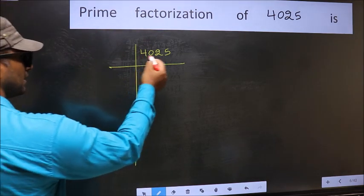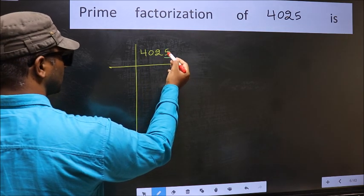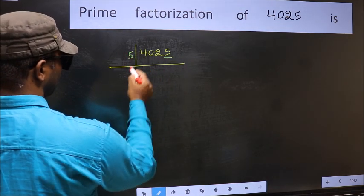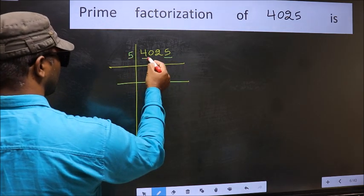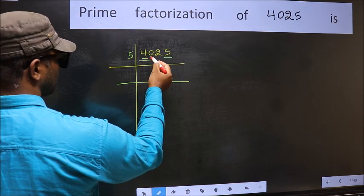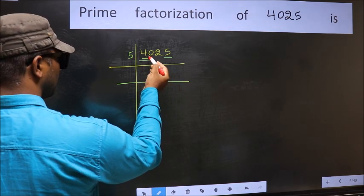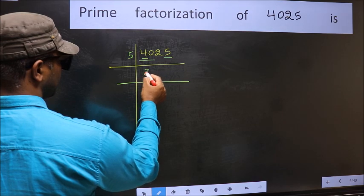Next, in this number, last digit is 5, so take 5. First number 4 is smaller than 5, so take two numbers: 40. When do we get 40 in the 5 table? 5 eights is 40.